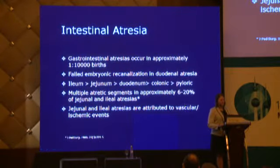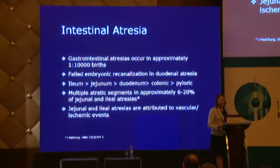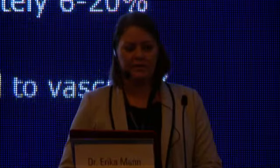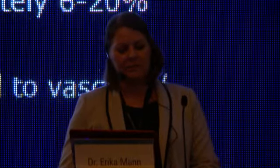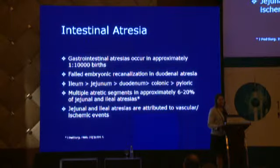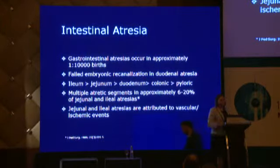Intestinal atresias occur at approximately 1 in 10,000 births. In duodenal atresia the cause is failed recanalization, but in the other atresias it's more likely due to vascular ischemic events in the remainder of the bowel. That's why duodenal atresia is usually a focal segment, whereas the other atresias are frequently multiple and can occur in different strings based on vascular distribution.